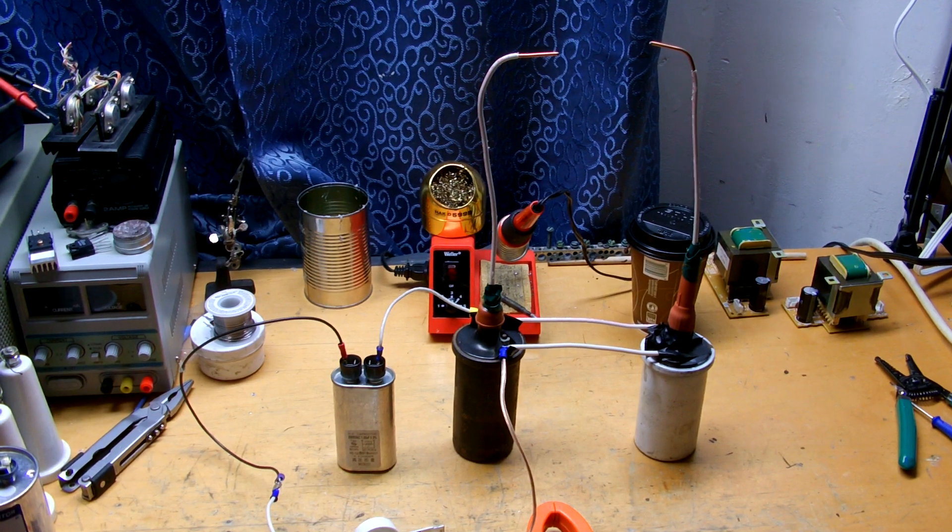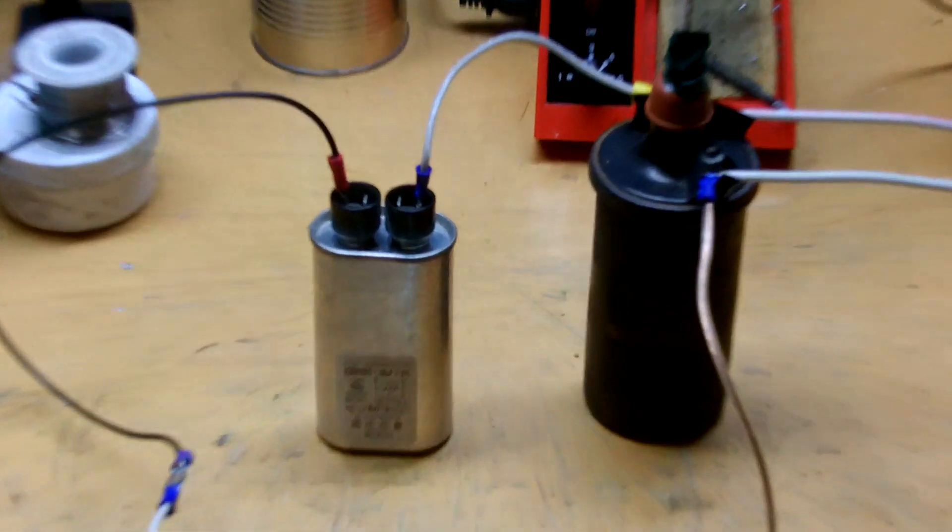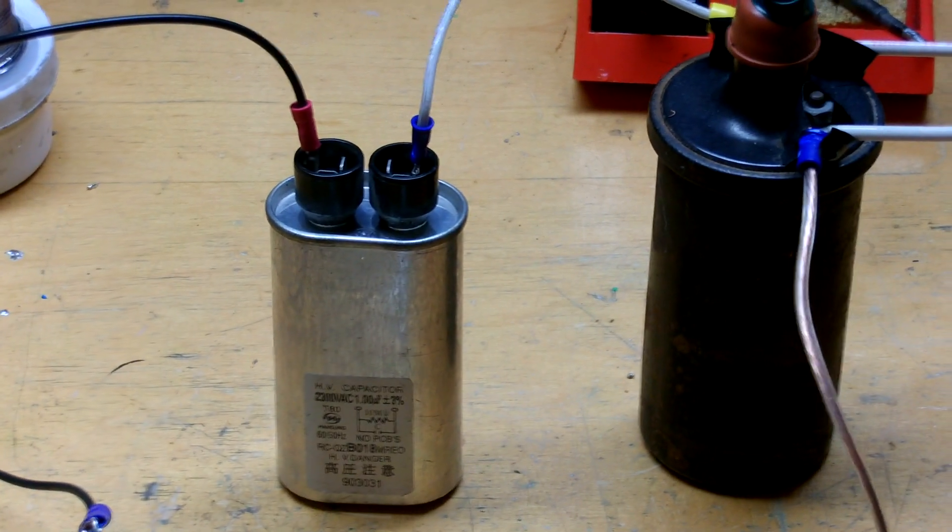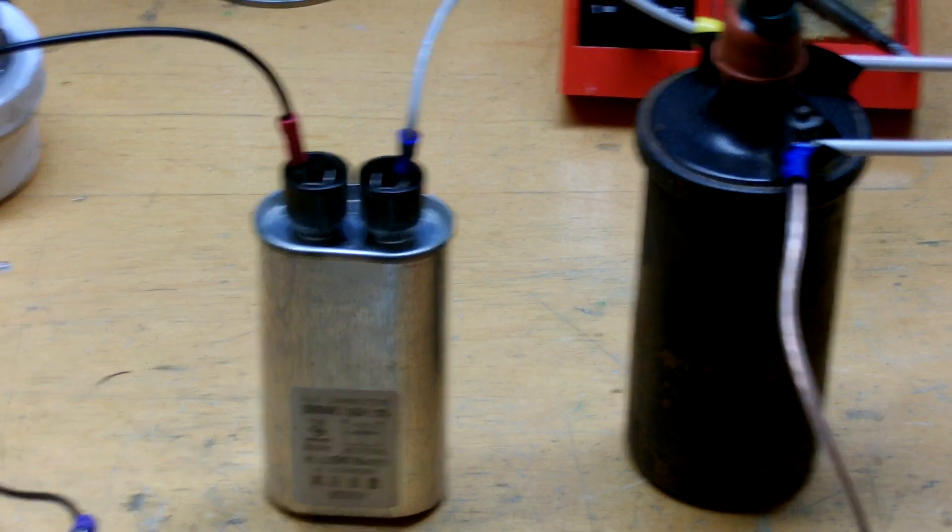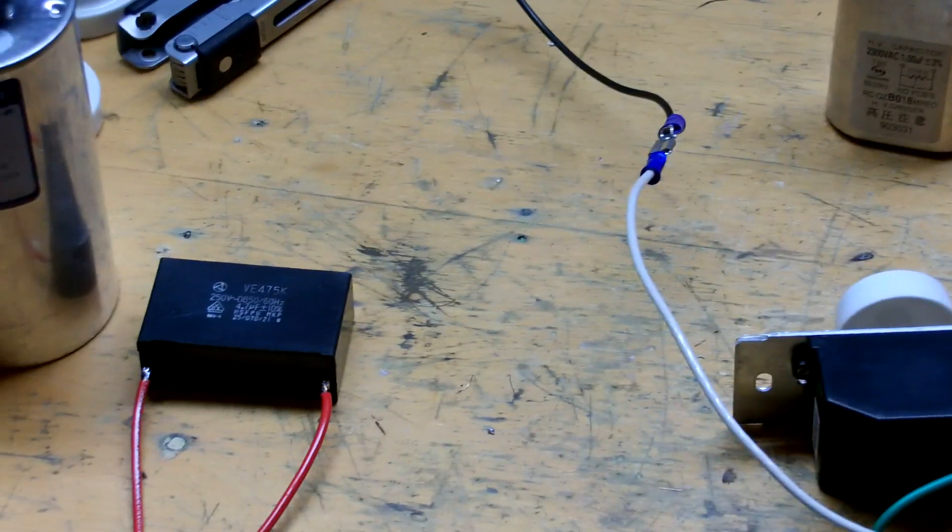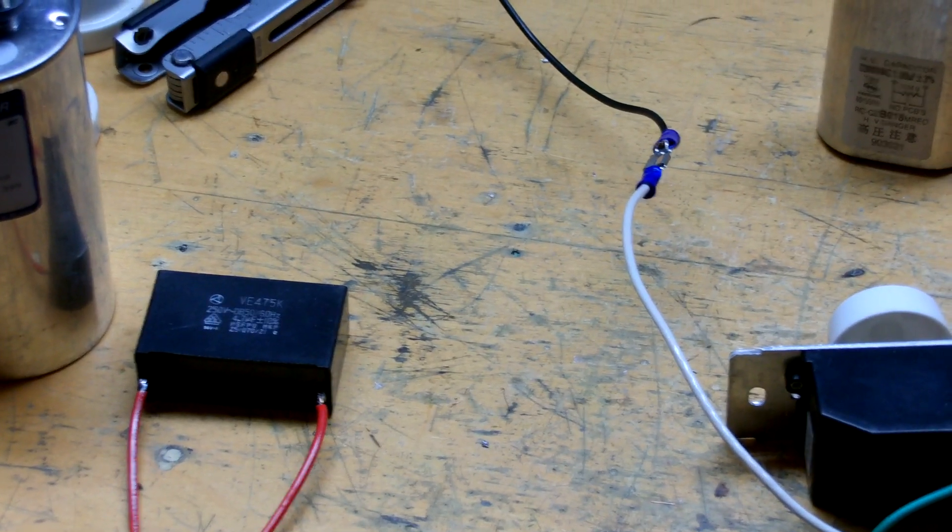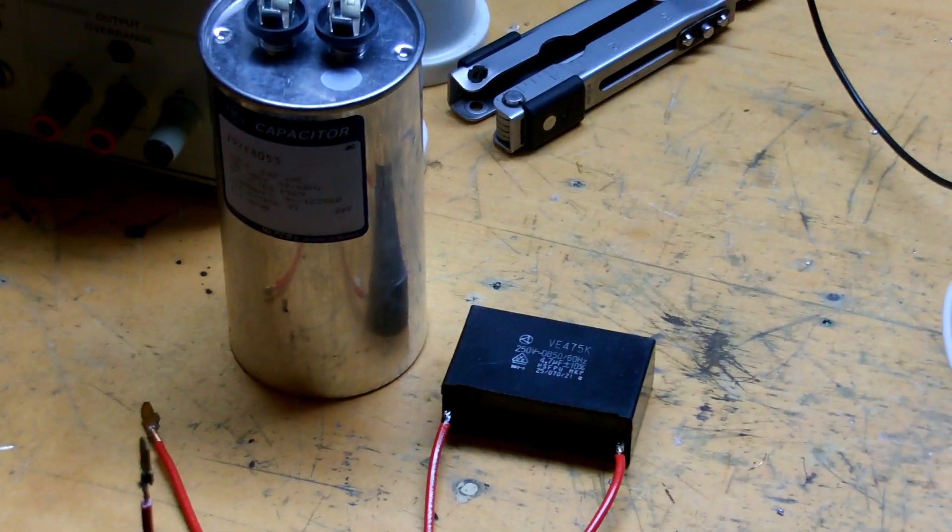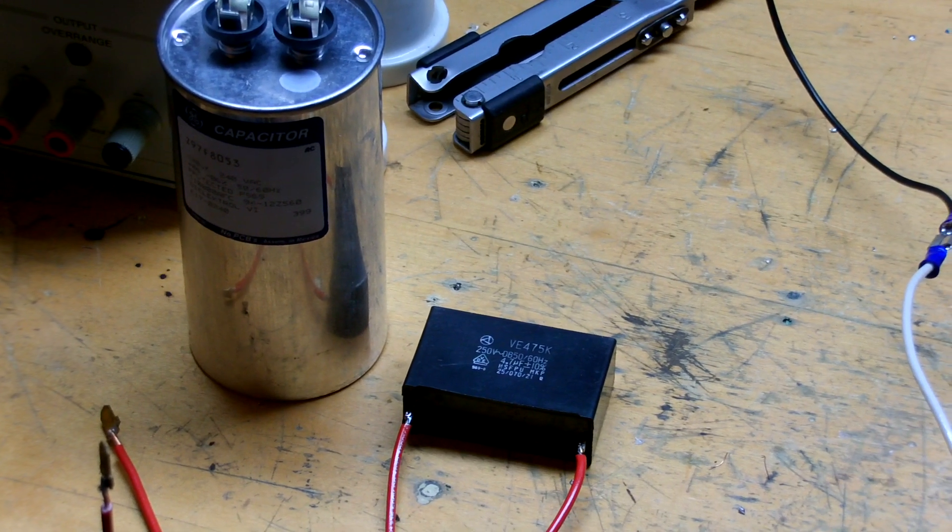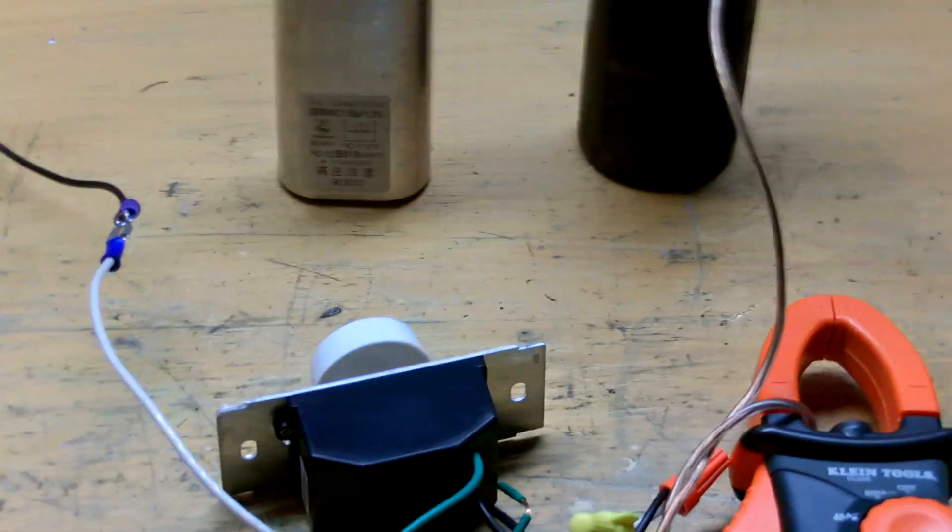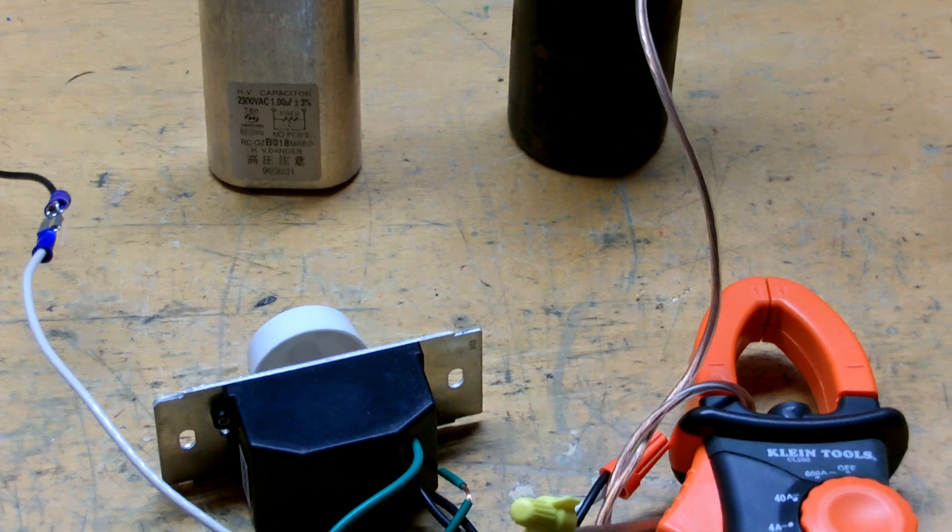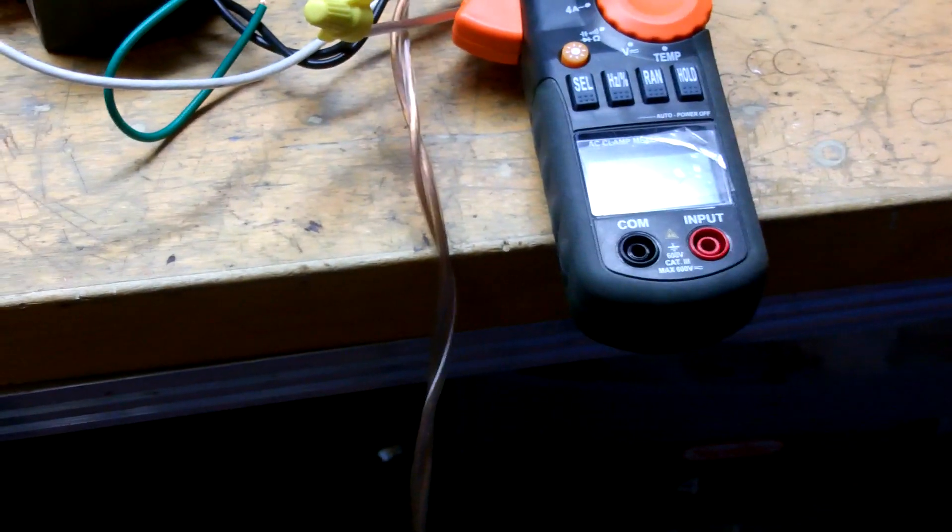So we'll start with this 1 microfarad microwave oven capacitor and progressively move up to this 4.7 microfarad, and then go all the way to this 120 microfarad capacitor. We'll show you the difference in between and hopefully get some current readings as I go.